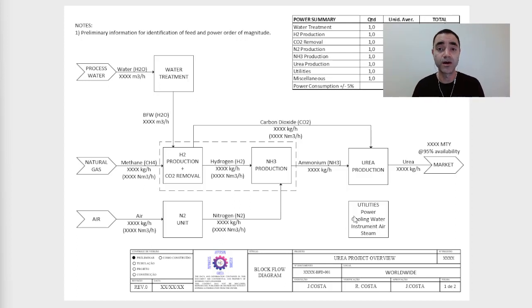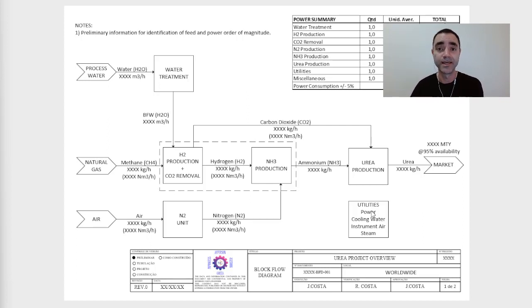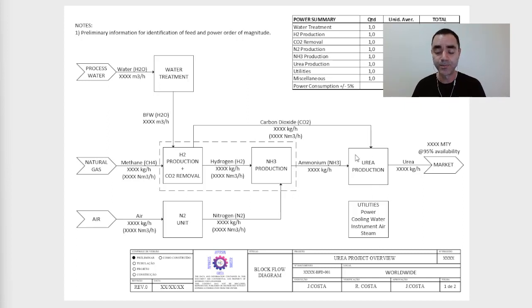Another utility that I will need — in fact, for most industrial processes, 99% of them — is instrument air, because I will have control valves and isolation valves that are in most cases actuated by pneumatic streams. So to have a pneumatic stream, I need instrument air. In some facilities, you will also have service air, process water, potable water, and so on. Here I am listing only the major ones in order that my clients can verify what is needed to install and operate the urea plant.